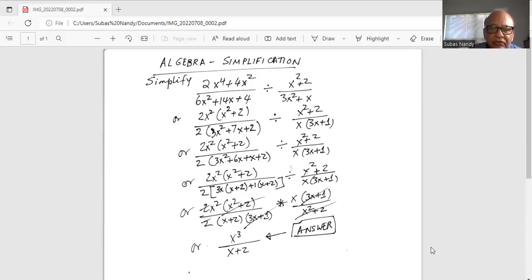we take 3x out from the first two terms to get x plus 2 inside the parenthesis, and then plus 1 from the next two terms to get x plus 2 inside the parenthesis, and that is divided by x square plus 2 divided by x times 3x plus 1.